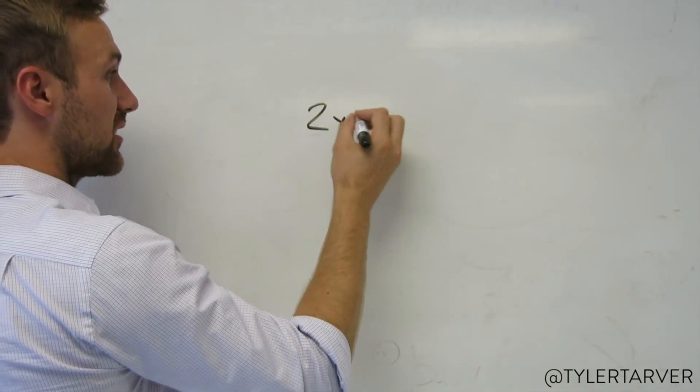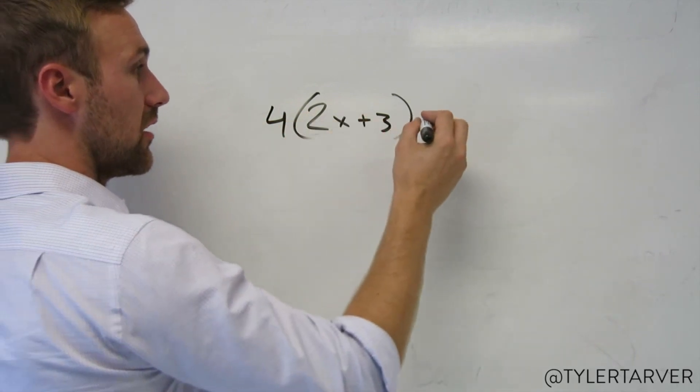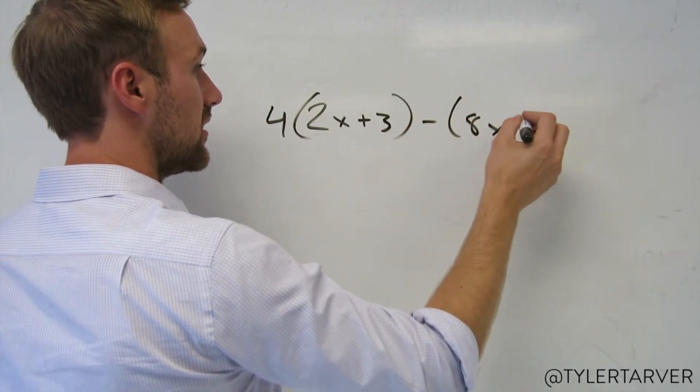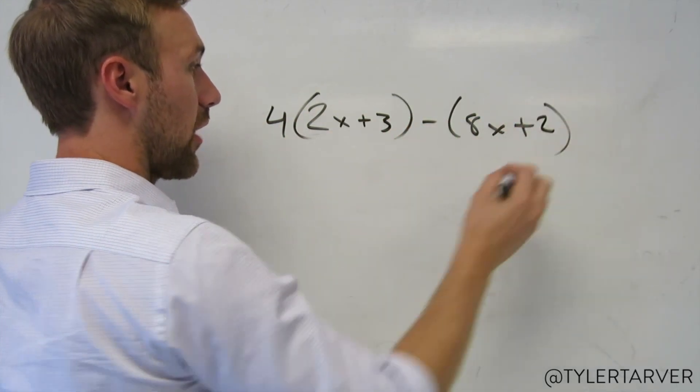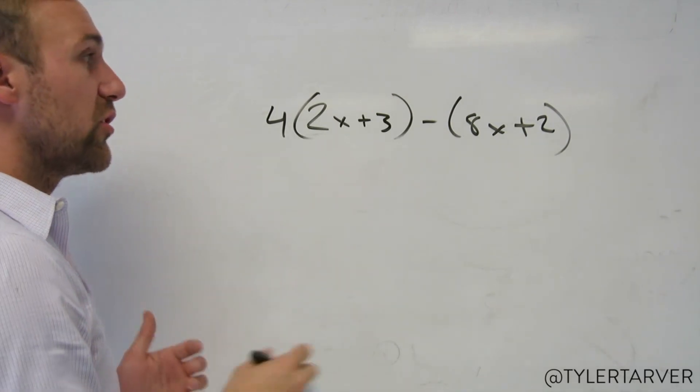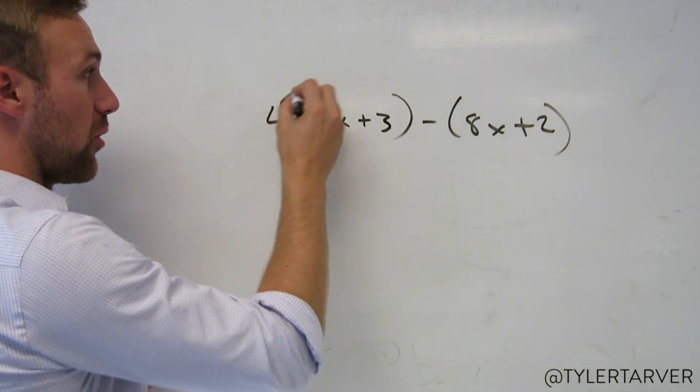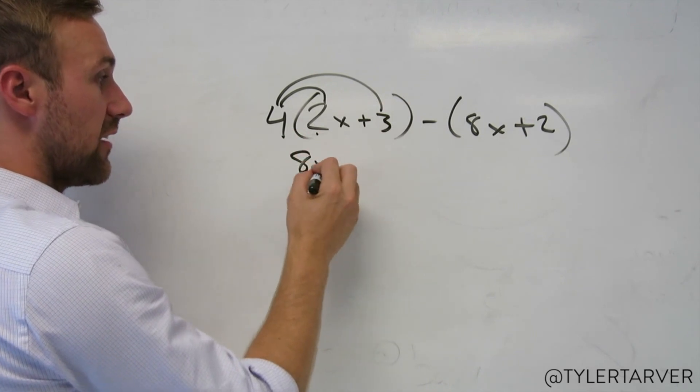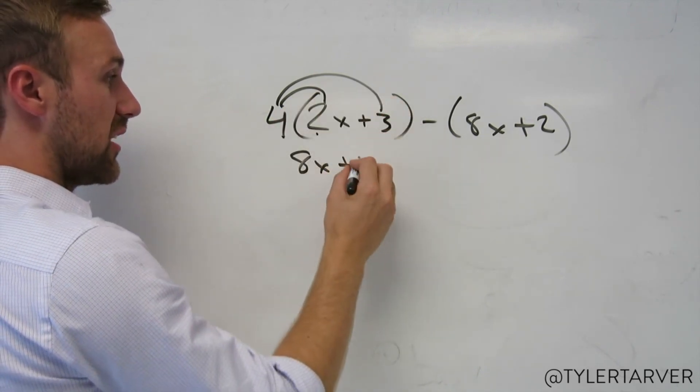Let's say you got 4(2x + 3) - (8x + 2). You're going to do the distributive property here. You're going to distribute the 4, which means you're multiplying it there and there, so 4 times 2 is 8x, and 4 times 3 is positive 12.